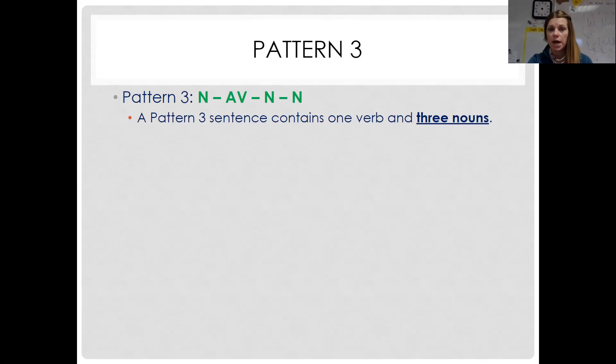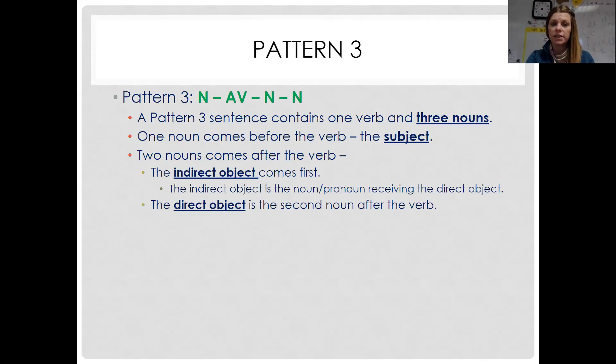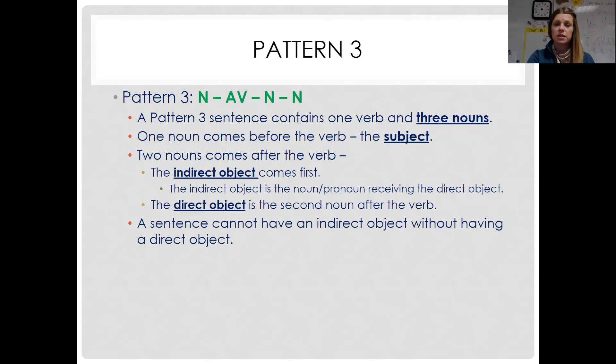And it has, like I said, a verb and three nouns. The first one is our subject. We know this already. Two nouns come after the verb. The indirect object comes first, so it slides in between the verb and the direct object. And the indirect object is the noun or pronoun receiving the direct object. And this might sound wonky until you actually see an example, and then you're like, oh, that makes sense. And then the direct object is the second noun after the verb. The direct object will always be the last noun. And what's really important is a sentence cannot have an indirect object if you don't have a direct object because that doesn't make any sense. You can't give somebody nothing.